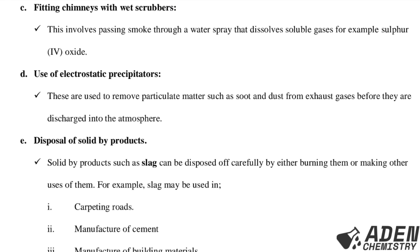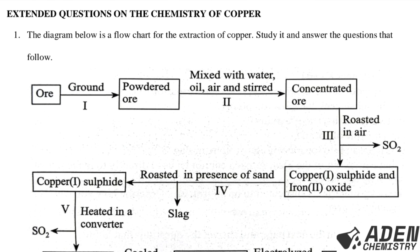D — use of electrostatic precipitators: these are used to remove particulate matter such as soot and dust from exhaust gases before they are discharged into the atmosphere. E — disposal of solid by-products: solid by-products such as slag can be disposed of carefully by either burning them or making other uses of them. For example, slag may be used in: number one, making roads; number two, manufacture of cement; number three, manufacture of building materials.